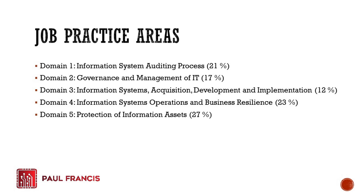Domain 1 is the Information System Auditing Process, covering planning and code of ethics. Domain 2 is Governance and Management of IT — management commitment flowing from the top. Domain 3 at 12% is Information Systems Acquisition, Development, and Implementation. Domain 4 is Information Systems Operations and Business Resilience, including business continuity. Domain 5 at 27% — the largest — is Protection of Information Assets, focusing on controls to protect those assets.